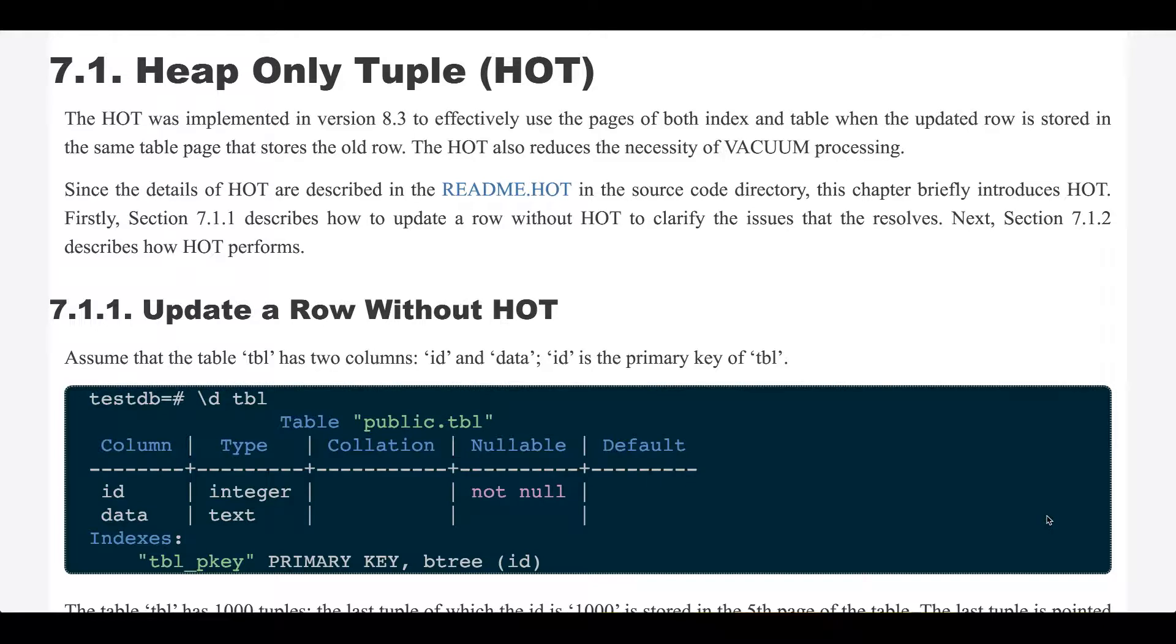Since the details of HOT are described in the readme.hot in the source code directory, this channel briefly introduces HOT. First, section 7.1.1 describes how to update a row without HOT to clarify the issues that it resolves. Next, section 7.1.2 describes how HOT performs.